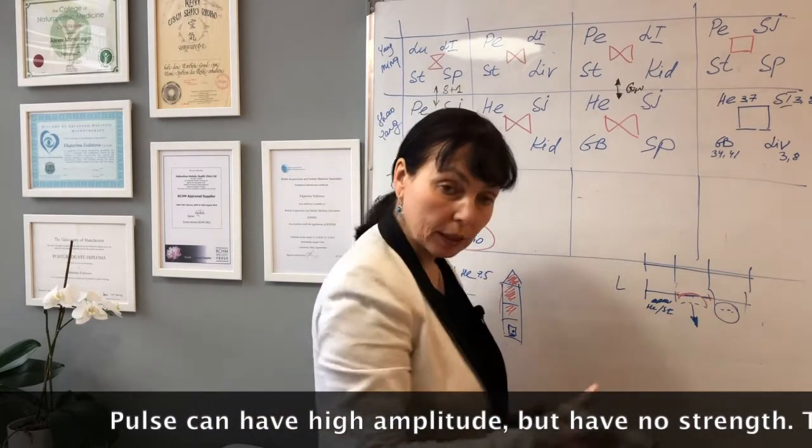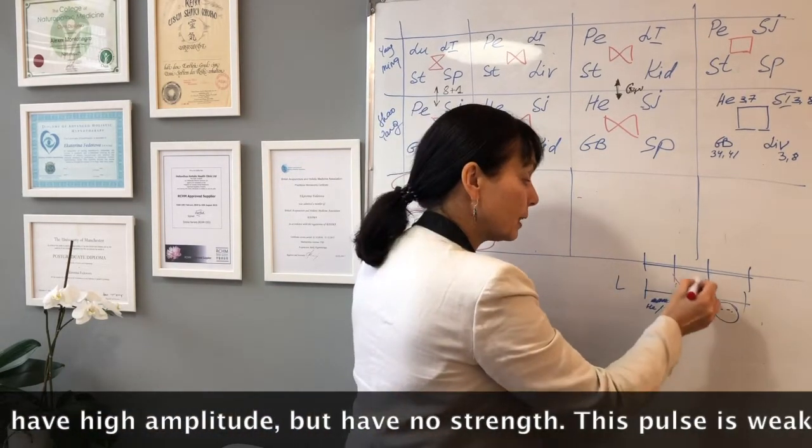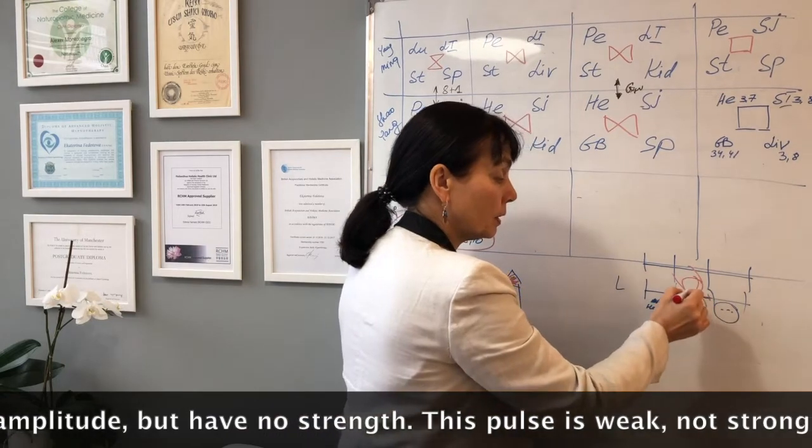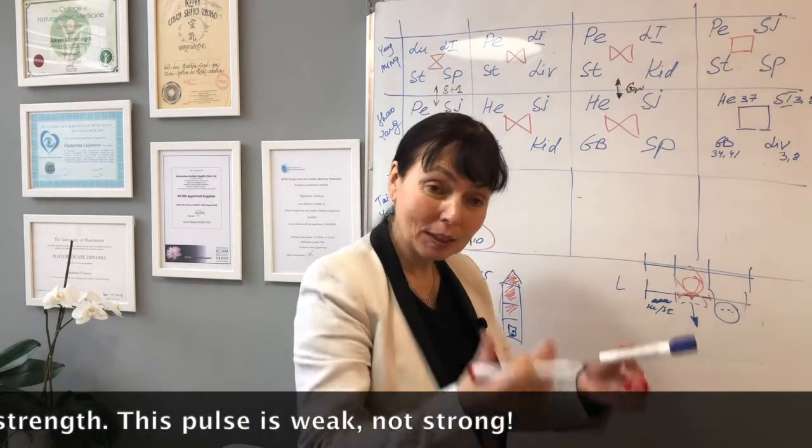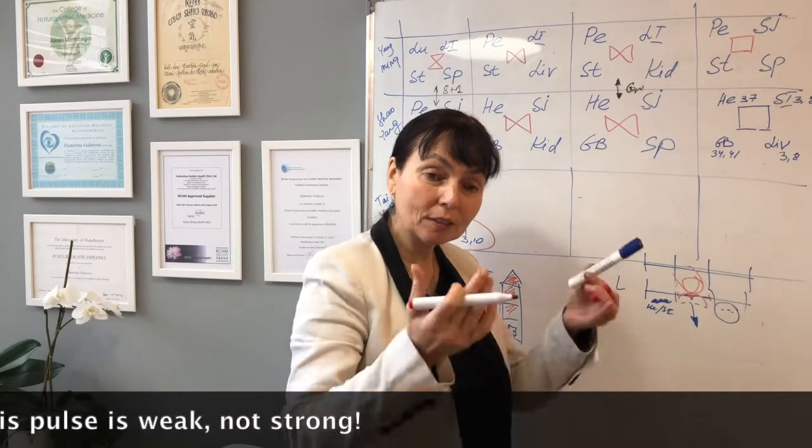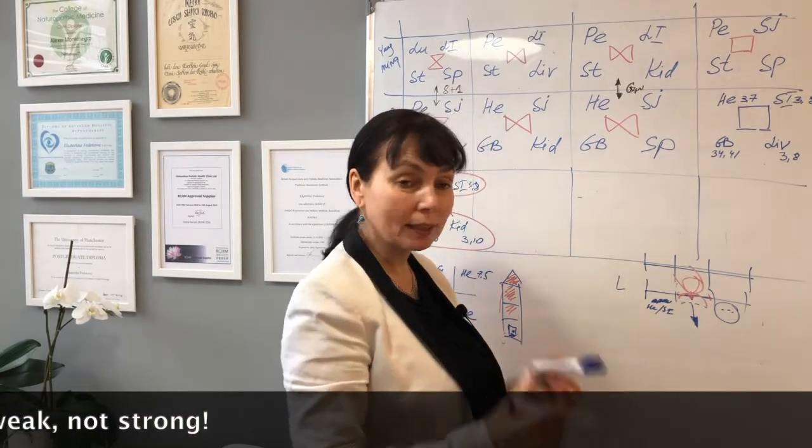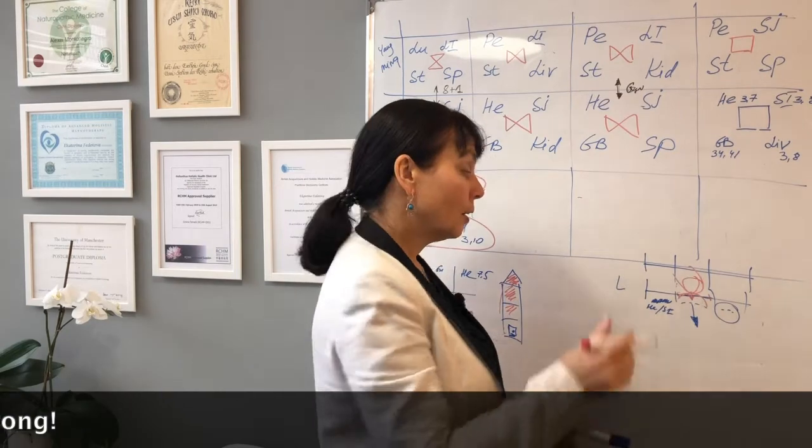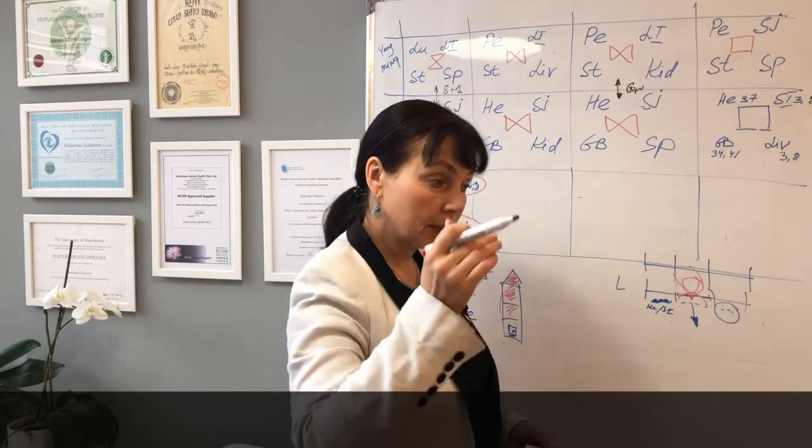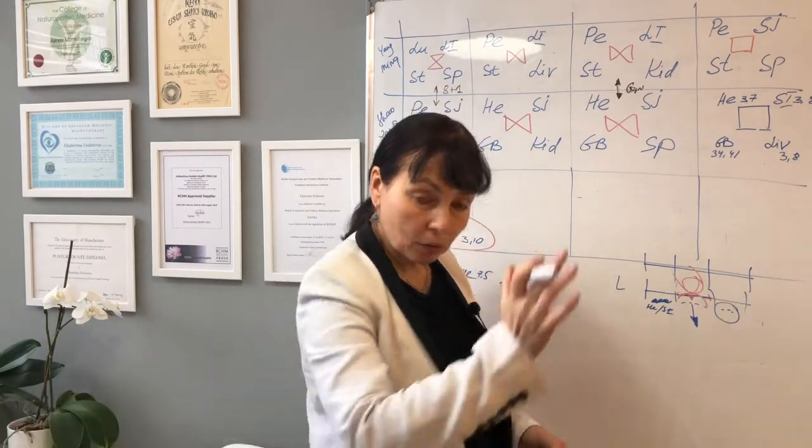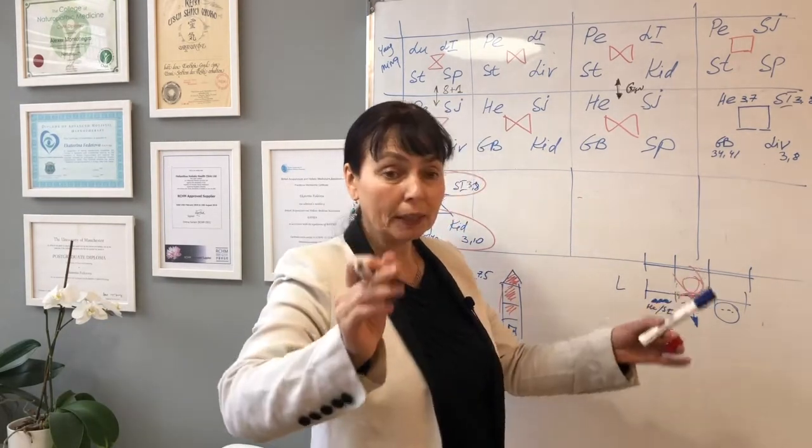How to understand whether it's weak or not? You press down, and this pulse disappears. It doesn't rebound, it doesn't have strength, it doesn't fight your finger. It just collapses under your finger. This is weak pulse. It can be up or down, but if it doesn't rebound, it doesn't fight, it's weak.